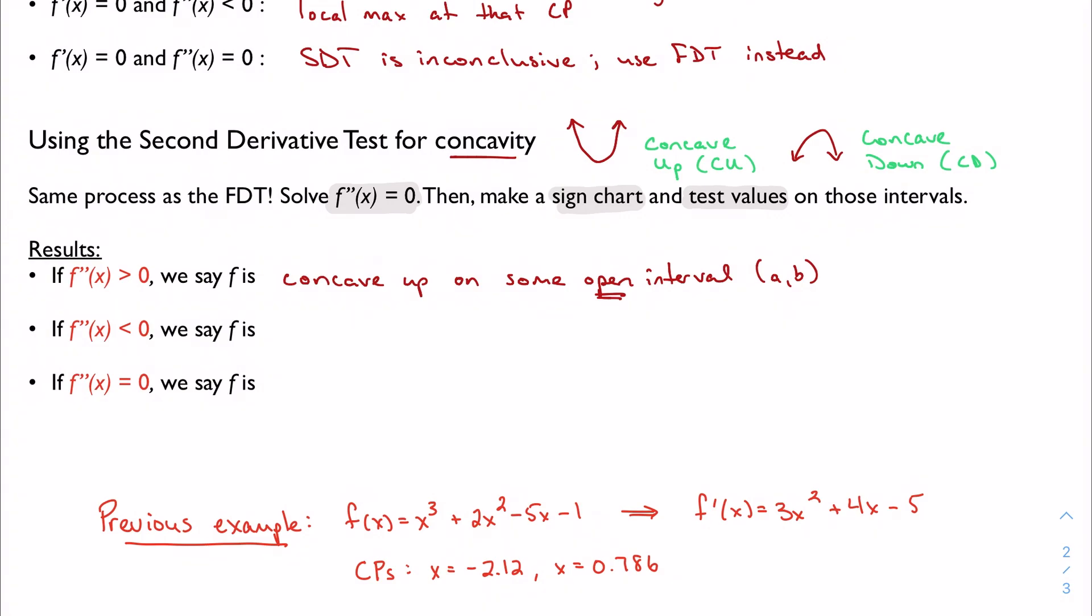If F double prime is negative, we say, so again, this is positive and this is negative, we say that it's concave down. Again, on the same open interval, or just on some open interval, rather.